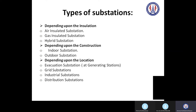Talking about industrial substations, these are always installed inside heavy industry — like refineries, petrochemical plants, and steel plants. That is the industrial type of substation. So this is the classification of substations.